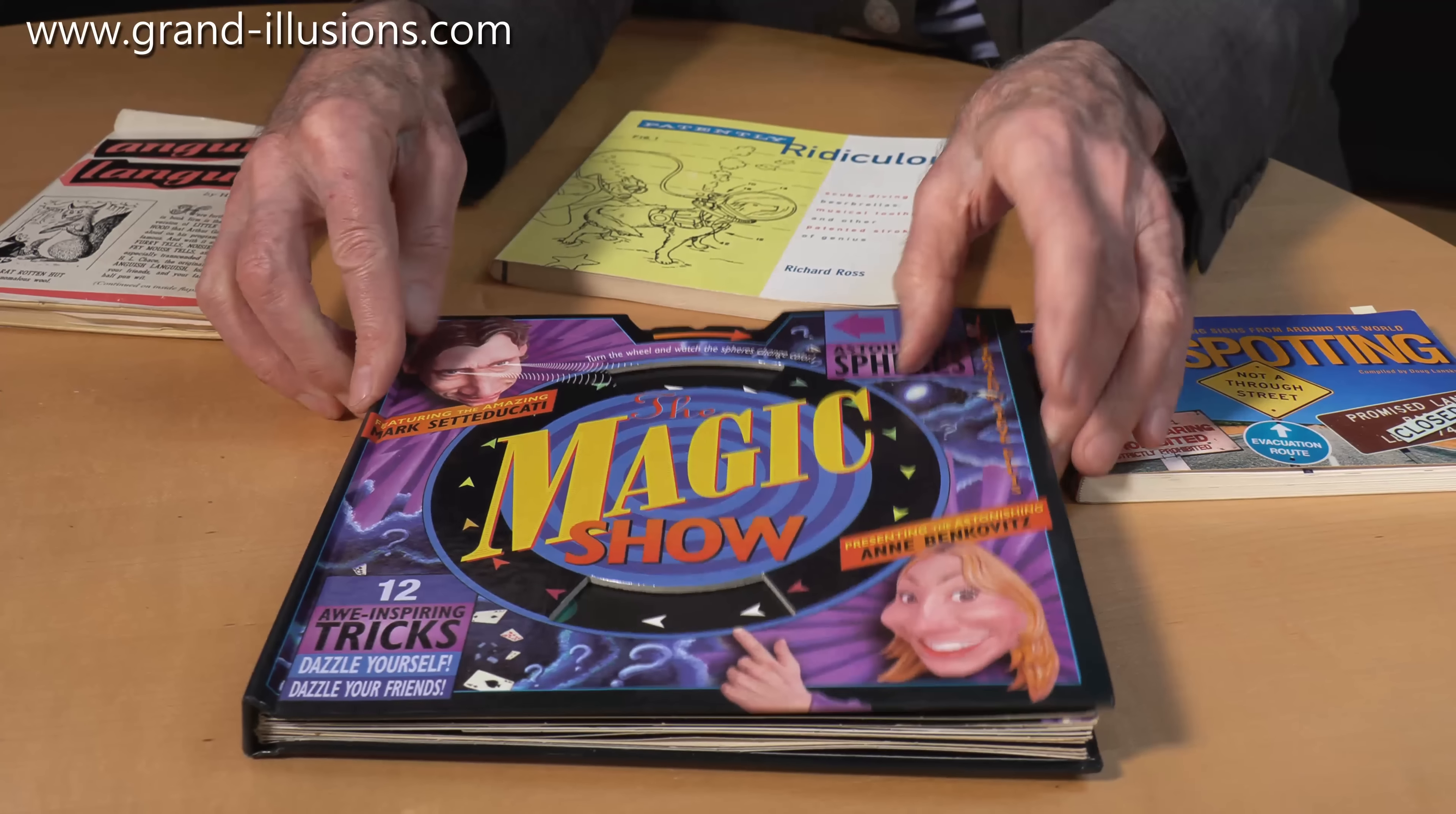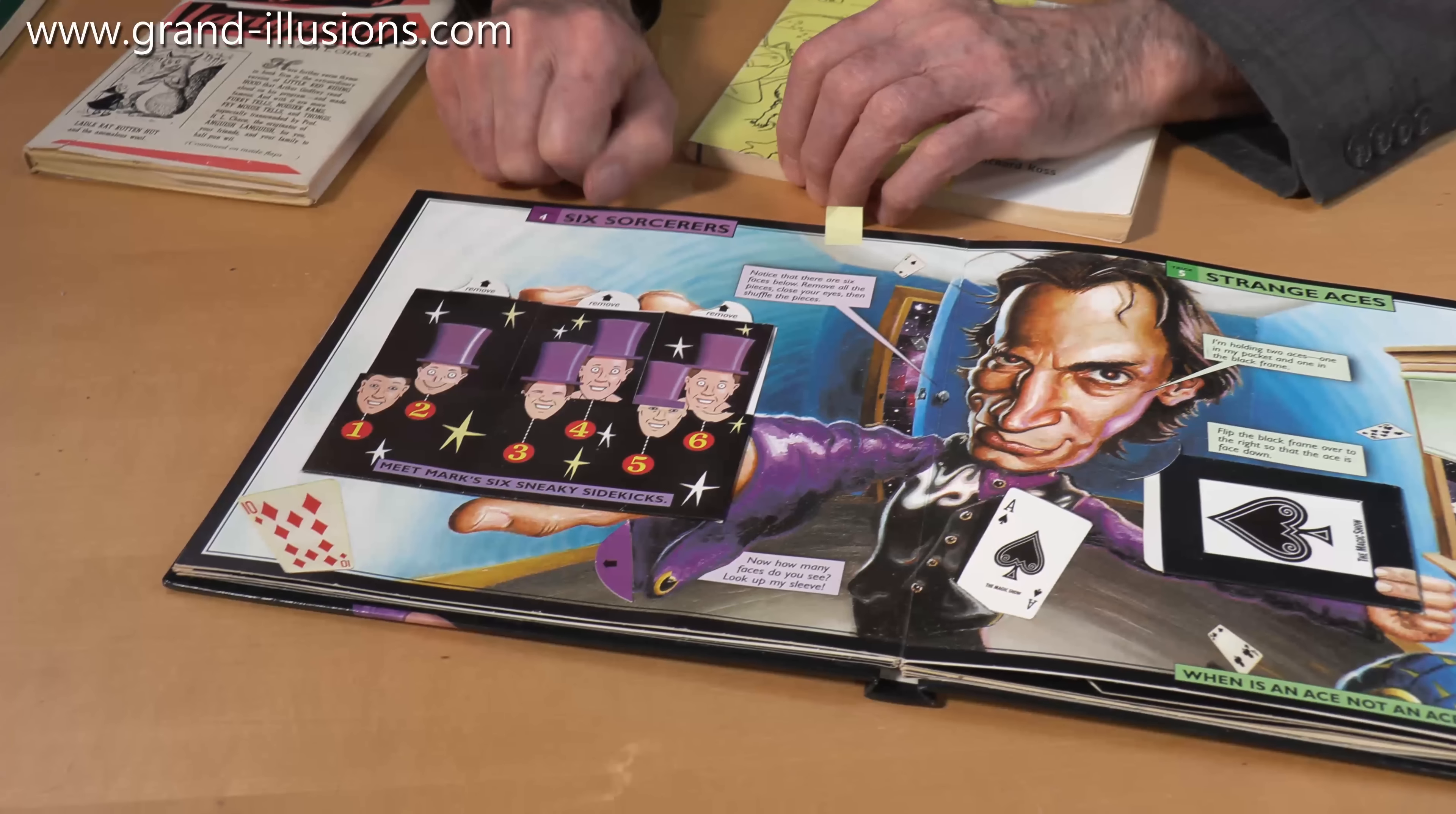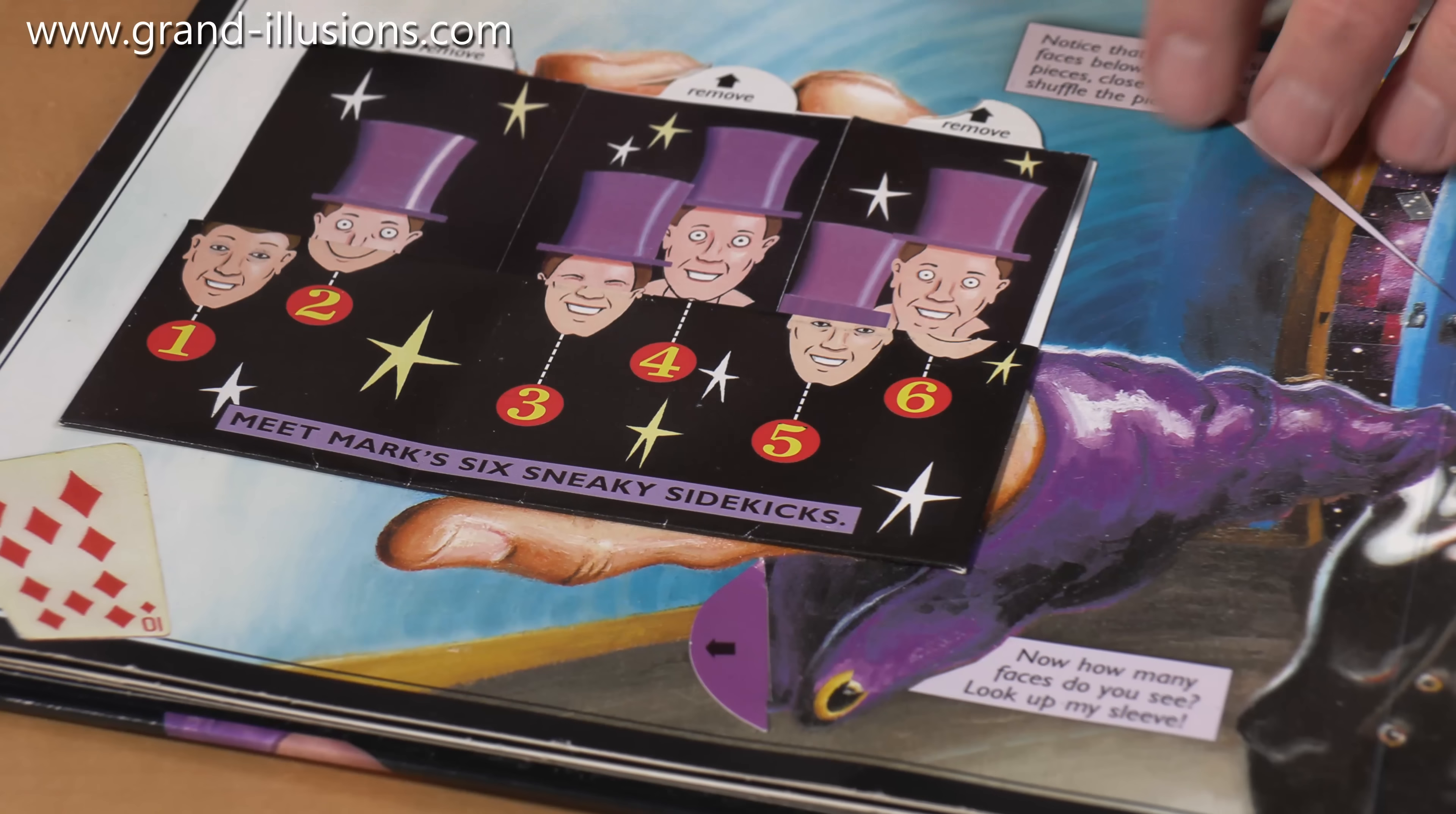And there's one other one here, which I am very fond of, because I do love missing area paradoxes, as they're called, where areas or figures seem to disappear. So he invites you to look at the magicians here. There's one, two, three, four, five, six of the magicians, and all you've got to do is take them out and insert them according to his color scheme underneath.